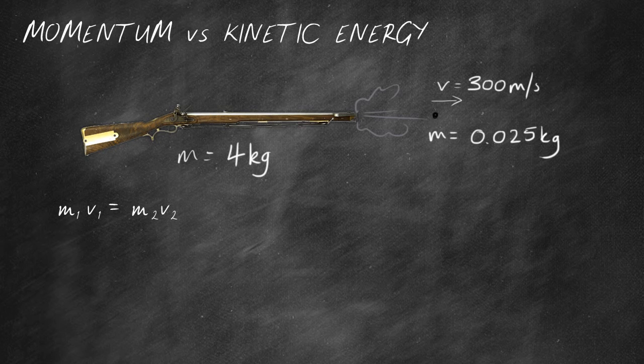Now firstly, I'm going to use the law of conservation of momentum to calculate the velocity with which the rifle recoils.